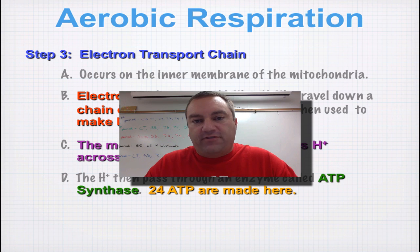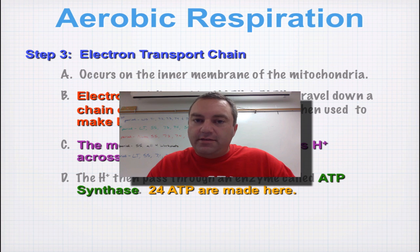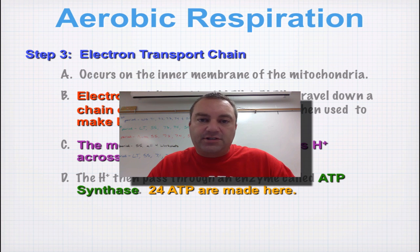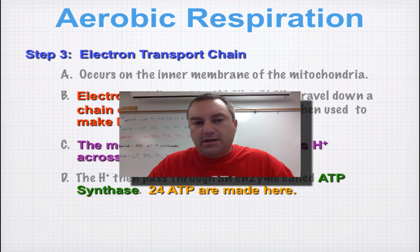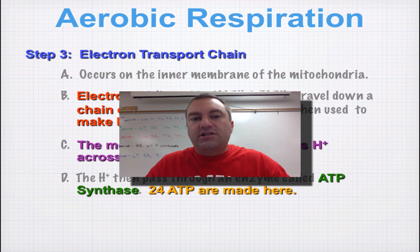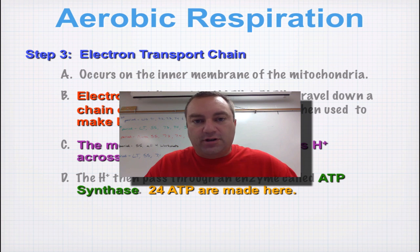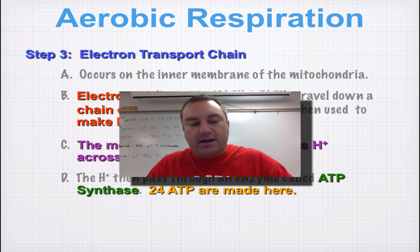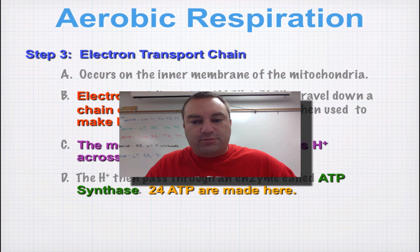Alright, welcome to episode 5 from chapter 9. In this episode, we're going to cover the third and final step of cellular respiration. You can argue it's the most important step because this is where most of the ATP is going to be produced. This step is called the electron transport chain.